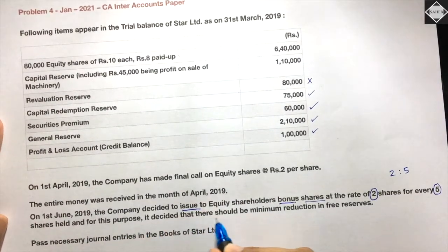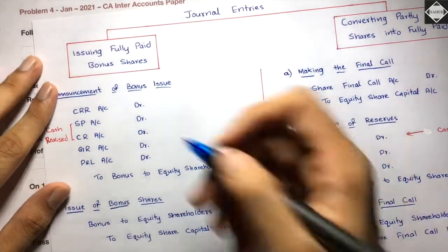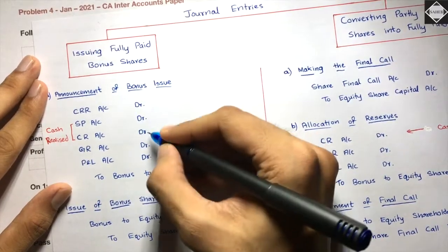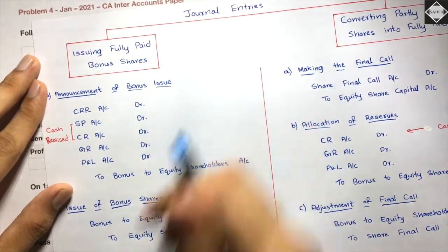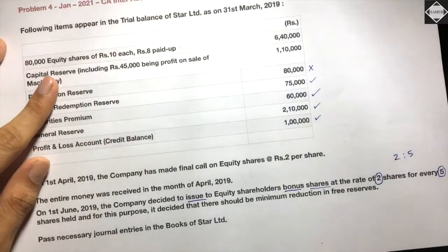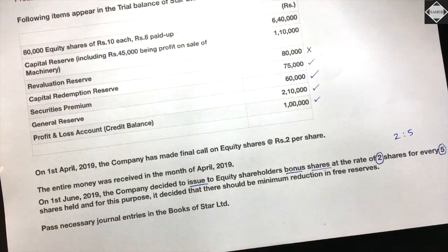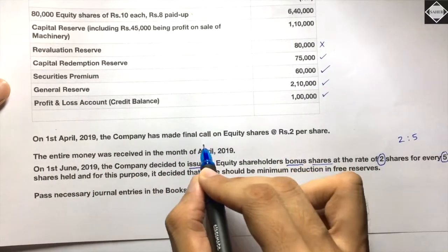For this purpose, the company decided there should be minimum reduction in free reserves. In bonus, there is a priority sequence: first use CRR, then Securities Premium, then Capital Reserve (realized in cash), and then free reserves in any order. Free reserves are utilized last, so there will always be a minimum reduction in free reserves. Now let's pass the necessary journal entries in the books of Star Limited.